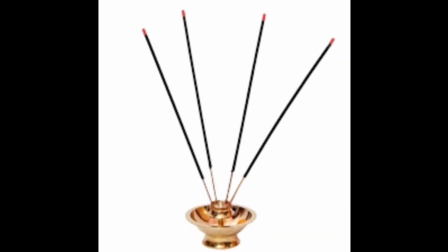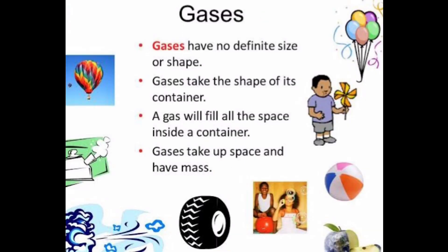When a perfume is sprayed or an agarbatti is lighted, the fragrance spreads all around the room. How? The matter in gases is very loosely packed, so they can move around freely in all directions. Hence, gases do not have a definite shape and do not occupy a definite space or volume. Most of the gases are colourless.